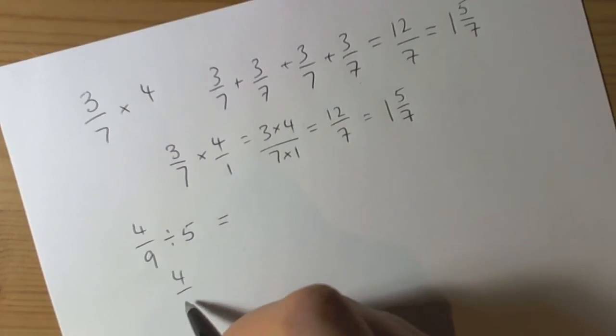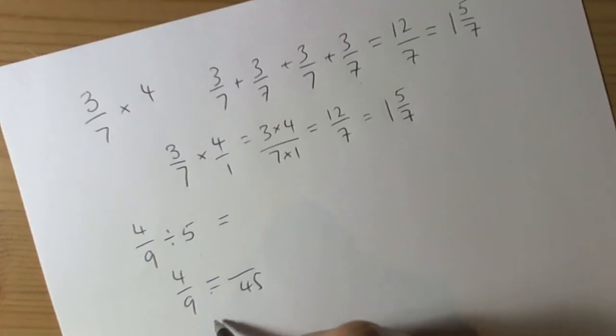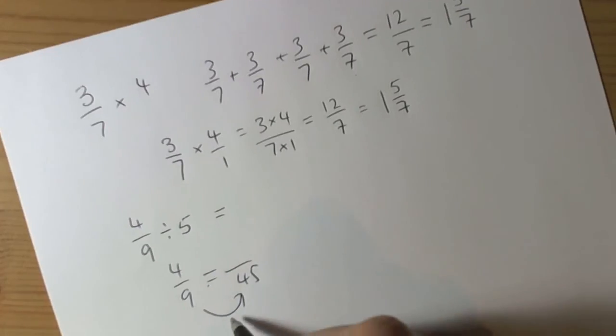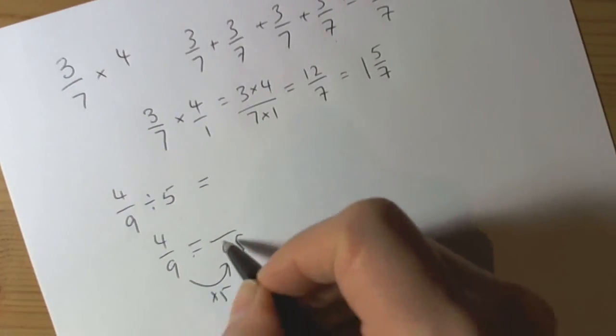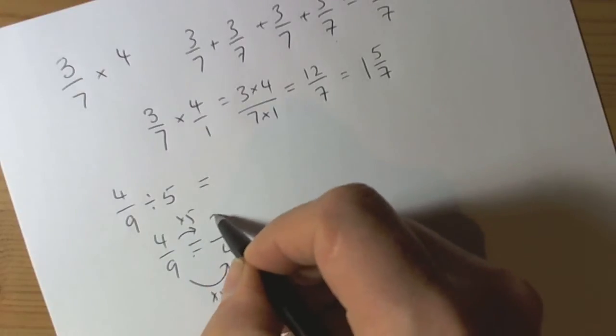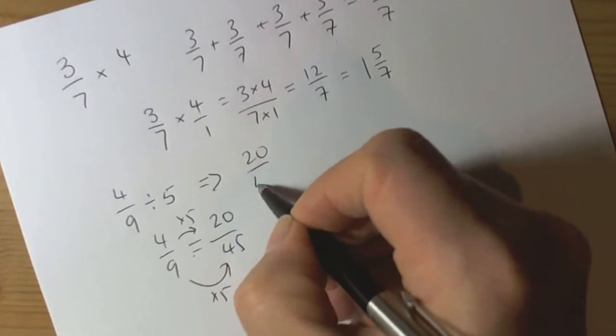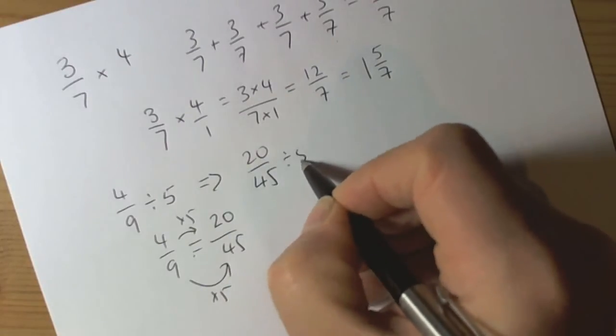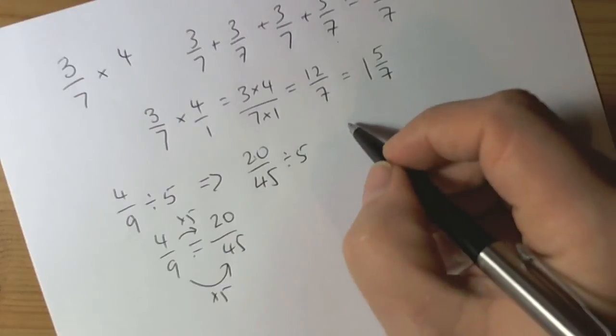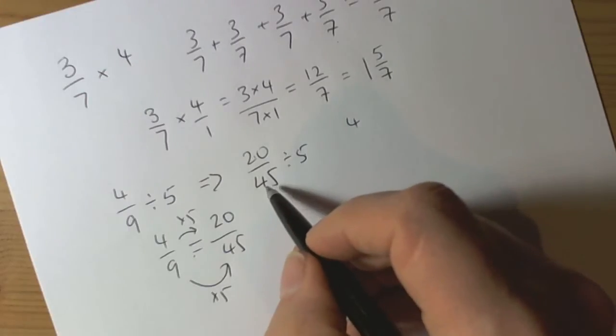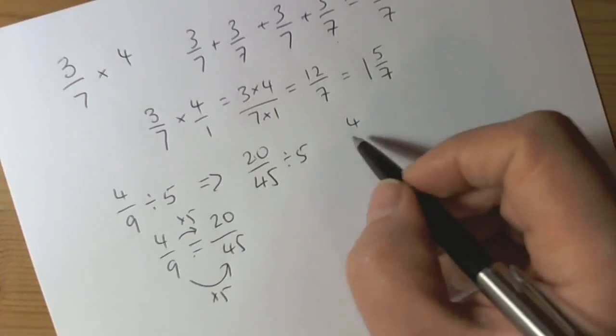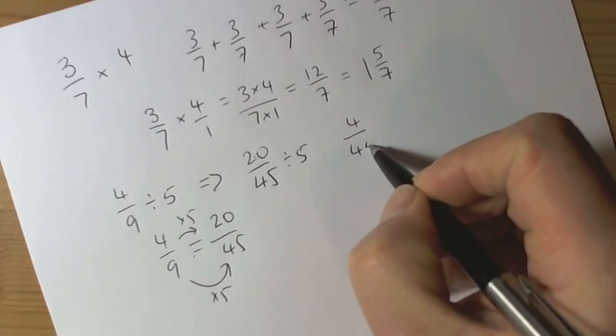So I could make this into 40 fifths. So to turn the 9 into 45, I had it times by 5. So I do the same to the numerator, times by 5. So we end up with 20, 40 fifths. So now we've got 20, 40 fifths divided by 5. Well, 20 divided by 5 is 4. And I don't need to divide the denominator, because I'm just saying there's 20, 40 fifths, and I'm sharing it into 5 piles. So there will be 4, 40 fifths in both.